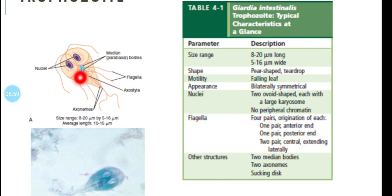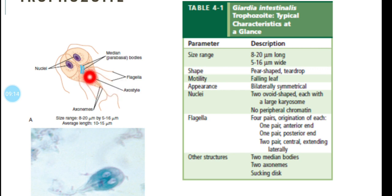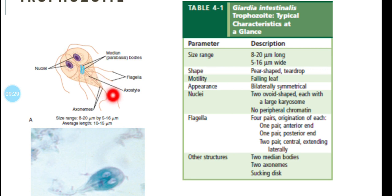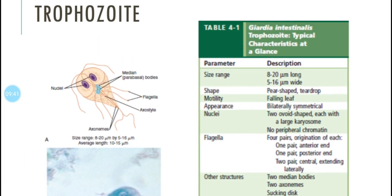Other structures include two median bodies with unknown function, made of cytoskeletal microtubules. The axoneme and axostyles are the interior proteins of the flagella, providing a central core and internal support that help in movement. The sucking disc — also called the ventral disc — is the area by which the Giardia trophozoite attaches to the intestinal mucosa.